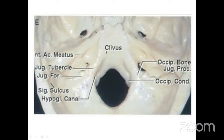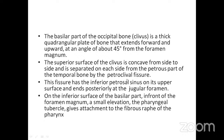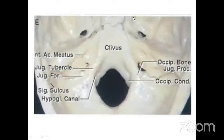The clivus is separated from the petrous bone by a fissure. The inferior petrosal sinus runs here and ends at the jugular foramen.